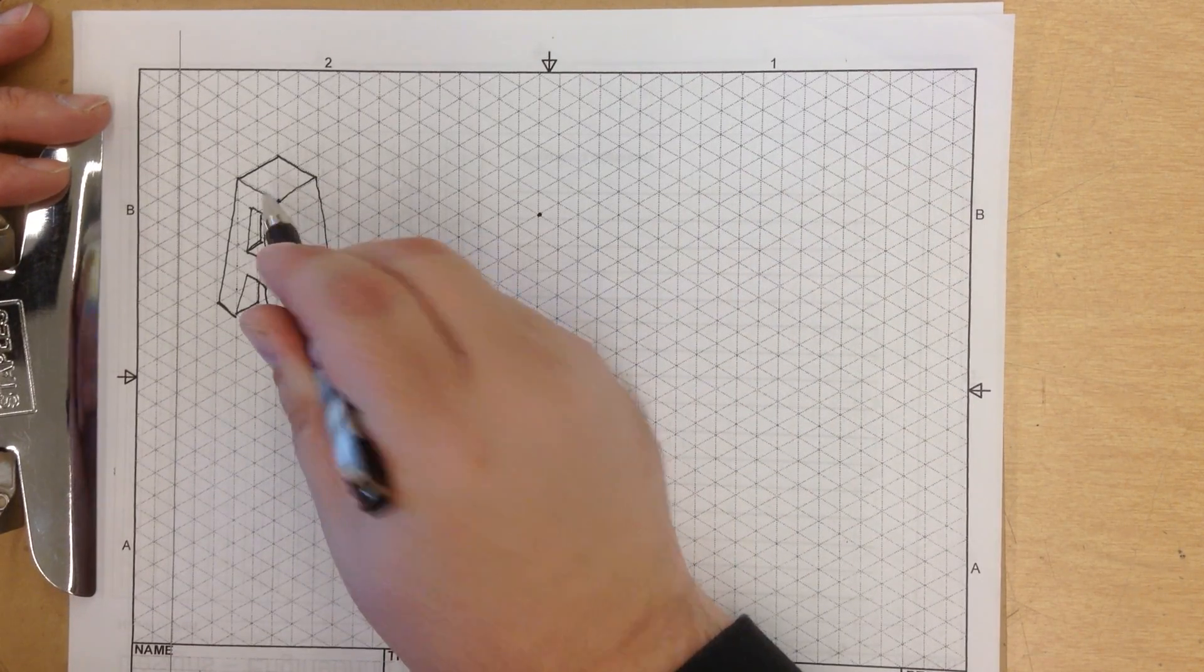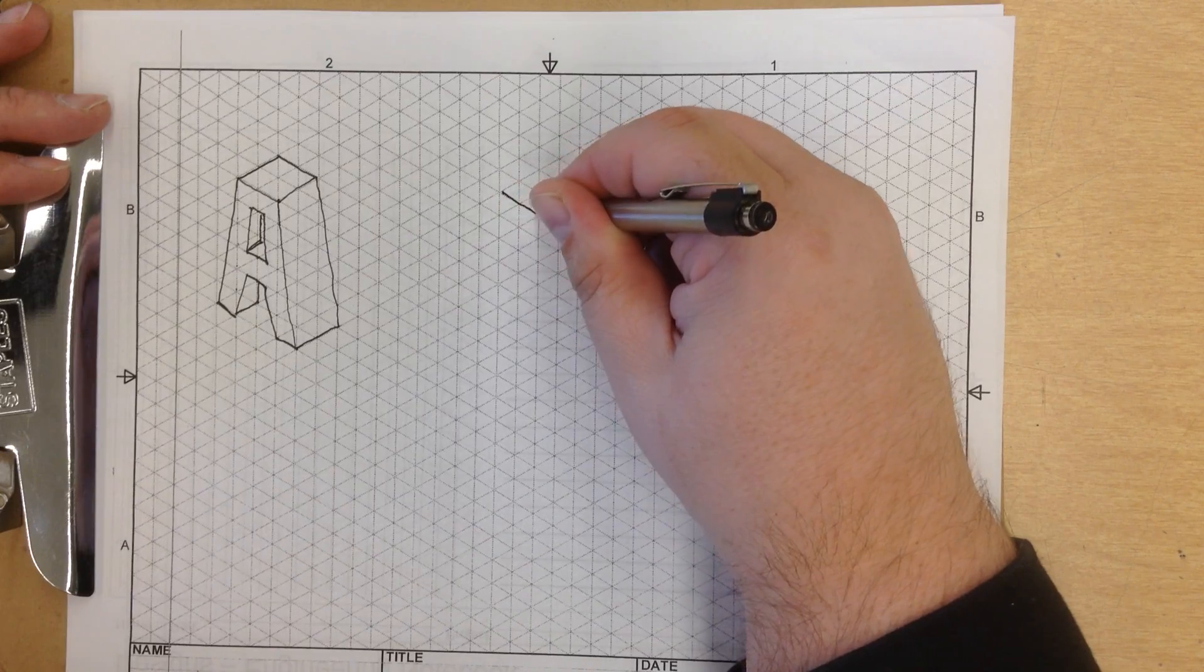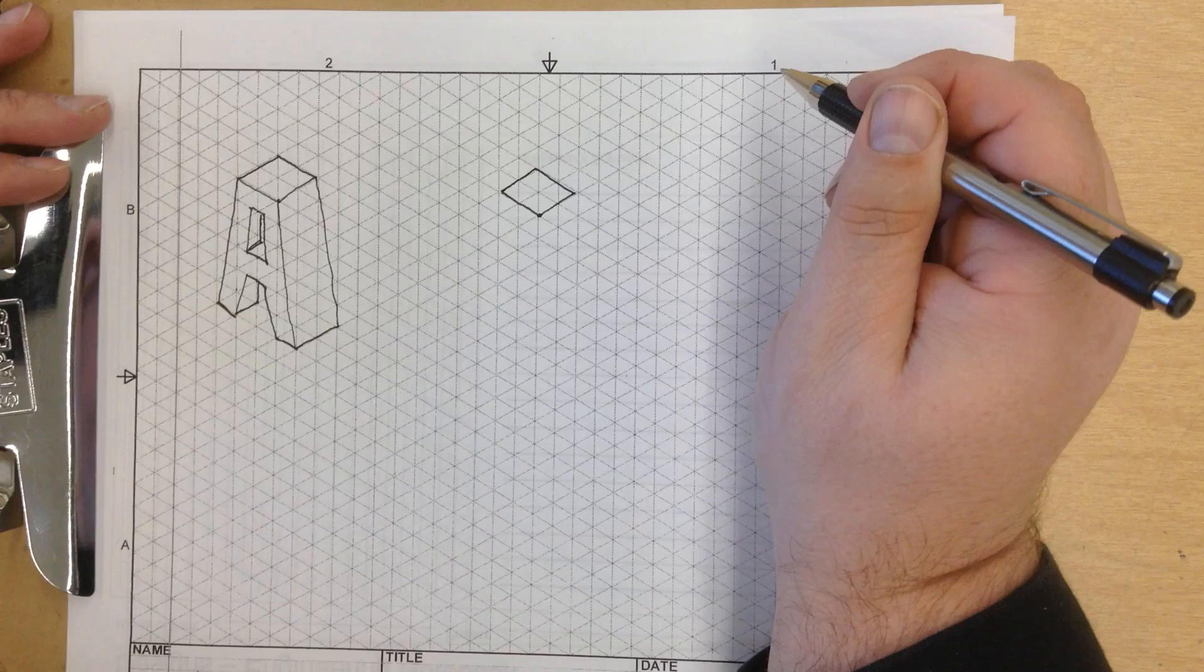And it's going to correspond with that on my A. My A has a 2-unit square top, 2 units over, 2 units over, and we close the shape.